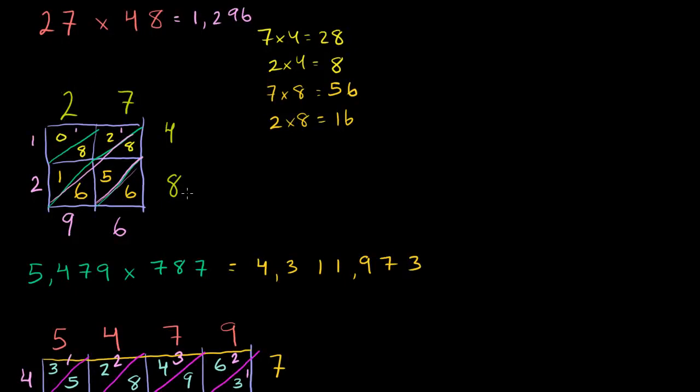In the last video, we did a couple of lattice multiplication problems and you saw it was pretty straightforward. You had to do all your multiplication first and then do all of your addition. But let's try to understand why exactly it worked. It almost seemed like magic.